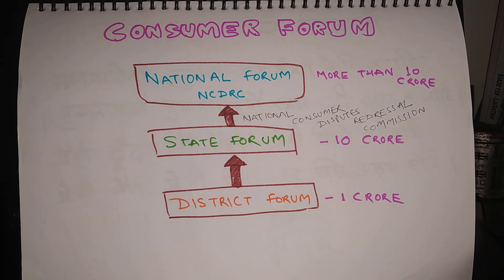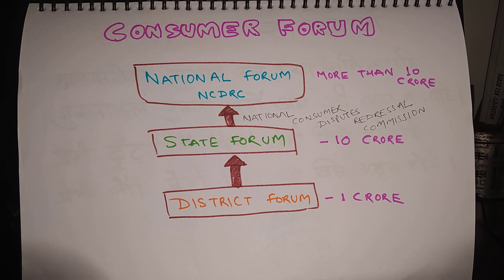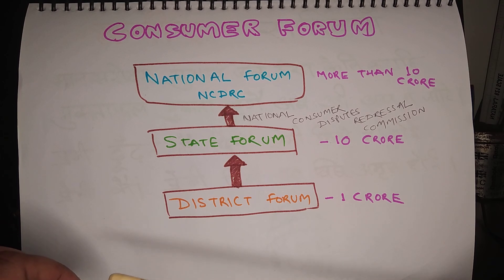To sum up: I talked about the various examples of consumers being cheated in India, then about the history of the consumer movement in India, then about consumer rights, and finally about the structure of the consumer forum in India. That's all for this lesson, thank you.